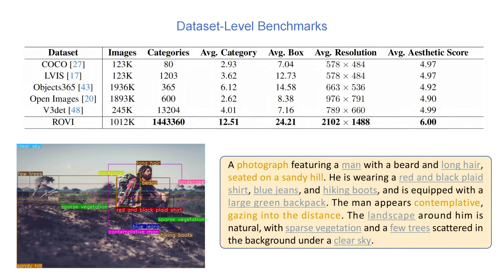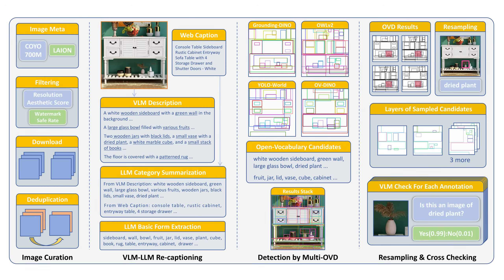As you can see in this comparison, RoVe dramatically outperforms existing datasets across all metrics — higher resolution, aesthetic quality, and category coverage — translating directly to better generation results.